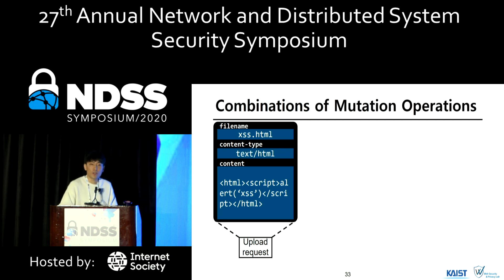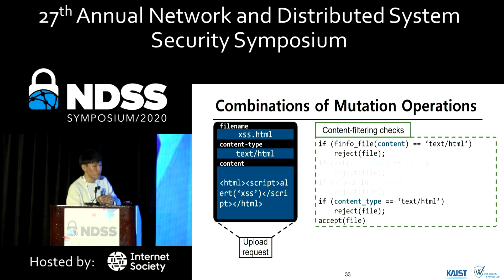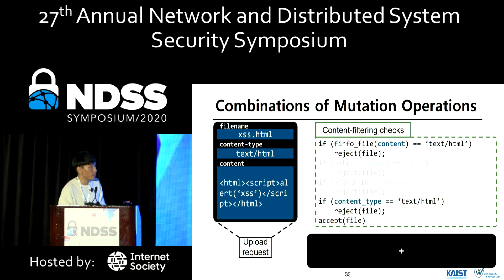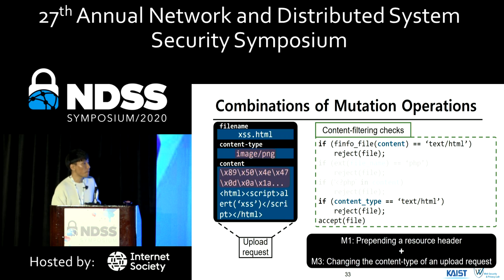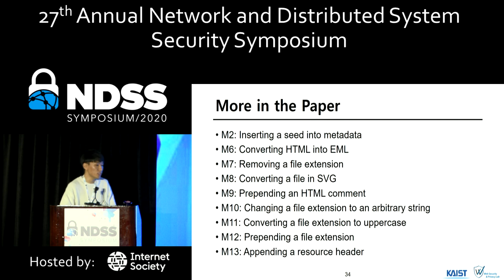Those are all the mutation objectives we studied. Multiple kinds of checks may be deployed in content filtering, but our system is able to bypass them by combining mutation operations. For example, FUSE combines M1 and M3 to achieve multiple objectives simultaneously. Please refer to our paper if you are interested in more detail about our mutation operations.